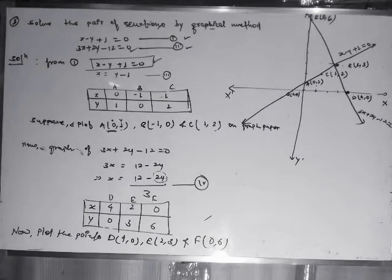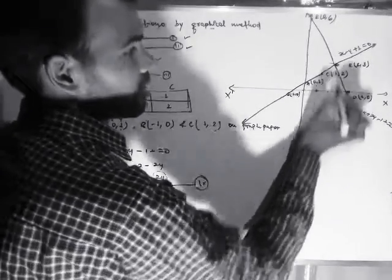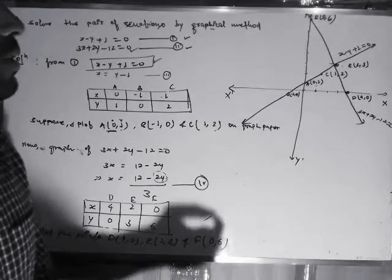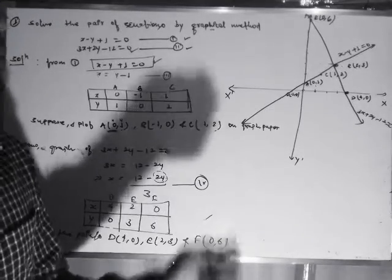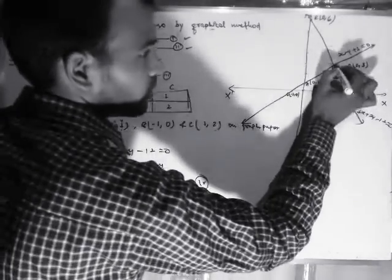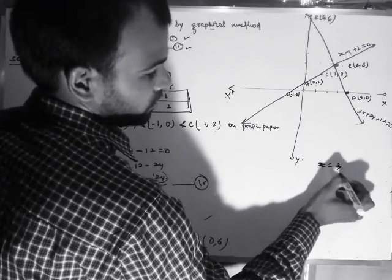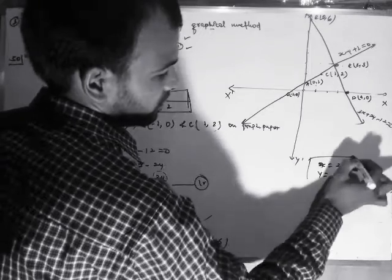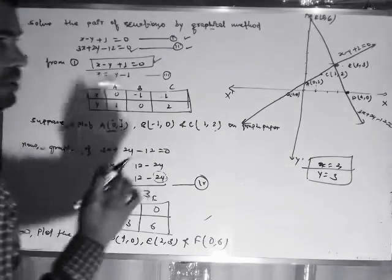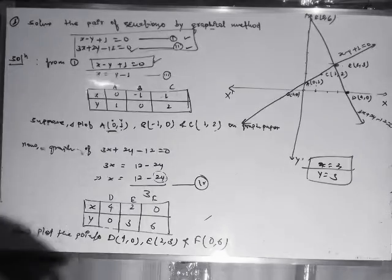Now as you can see, these two lines intersect each other at a single point. Then the solution of this graph will be x equal to 2 and y equal to 3. There is no problem — the value of x is 2 and the value of y is 3. So the solution of this pair of linear equations is x equal to 2 and y equal to 3.